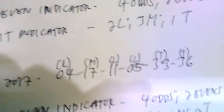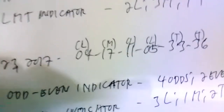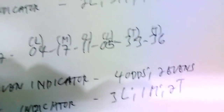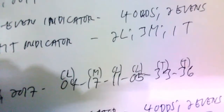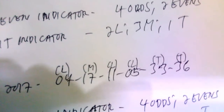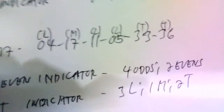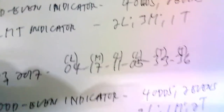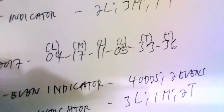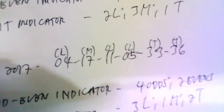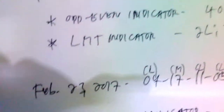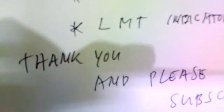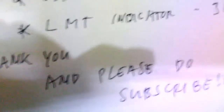On February 23, 2017, the results were 04, 17, 11, 05, 33, and 36. Under the odd/even indicator, this is four odd and two even — the odd numbers are 17, 11, 05, and 33. Under the LMT indicator, this is classified as 3 low, 1 middle, 2 top — the low numbers are 04, 11, and 05, the middle number is 17, and the top numbers are 33 and 36. This concludes the classification of number combinations for 6/42. Thank you for watching, please subscribe, and have a nice day.